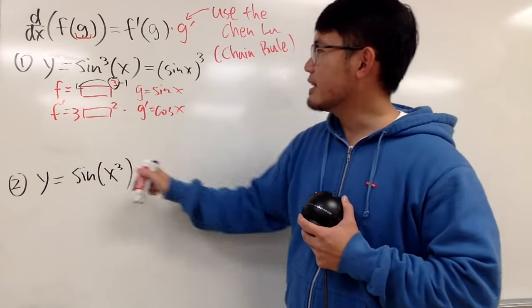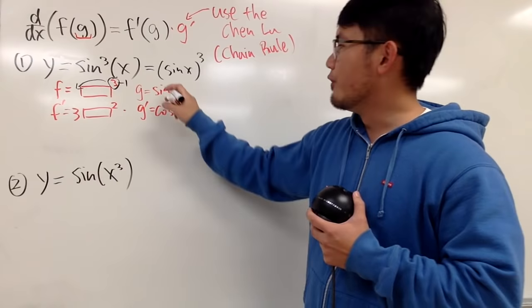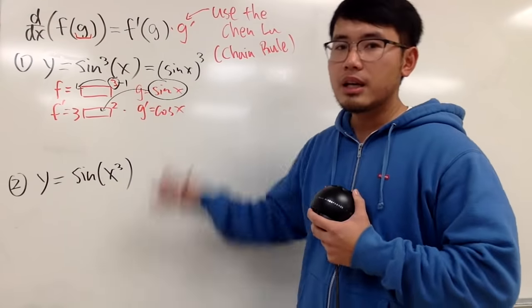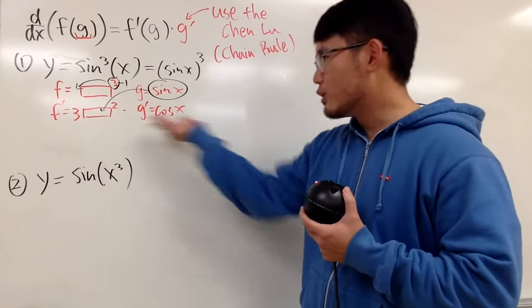f prime is that, and all we have to do is, you first take the g function, you put it in the box. All right? You put this in the box. And then this right here is your answer.